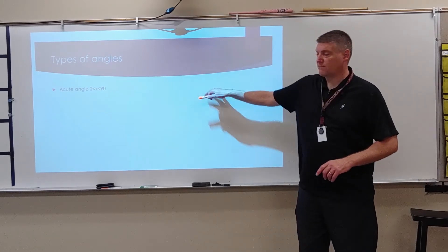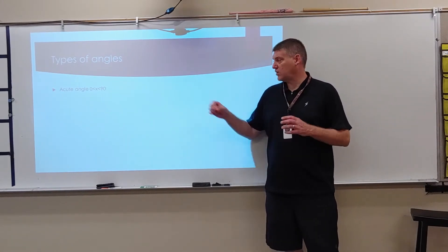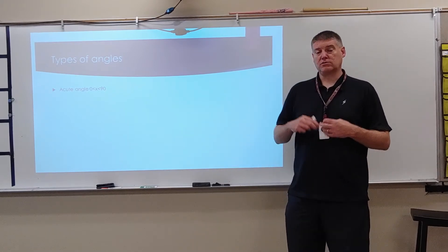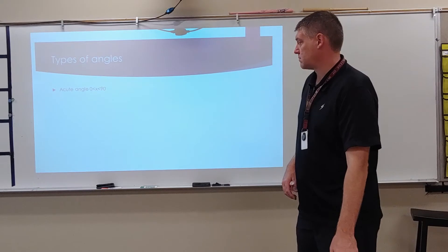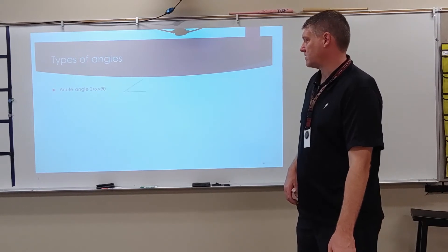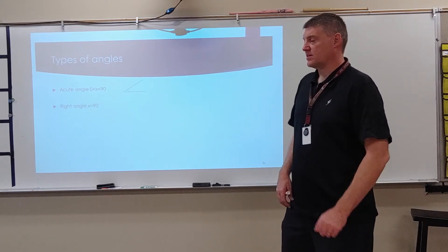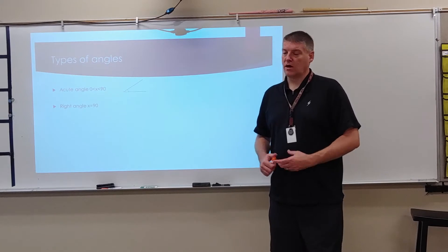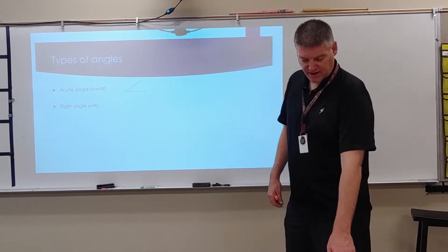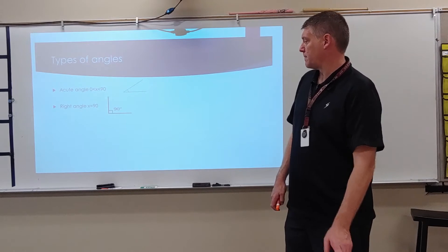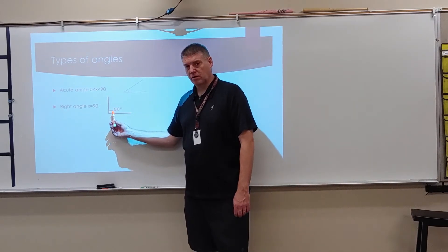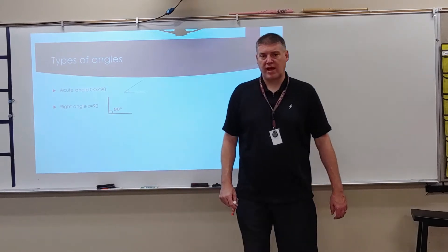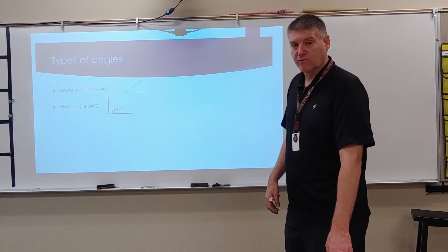Types of angles. So the first one is acute. An acute angle is an angle whose measurement is between 0 and 90. Here's an example of an acute. The next one is a right angle. A right angle has a measurement of 90 degrees. And you will notice here that this little symbol here, this right angle symbol, you will see that when we have a right angle. It just kind of reinforces that.